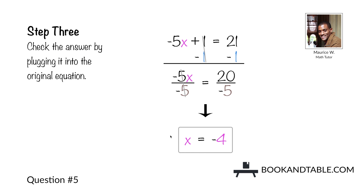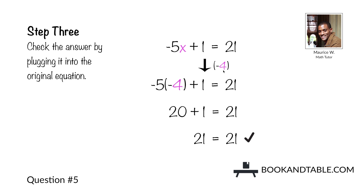Step three: check this by plugging it into the original equation, negative 5x plus 1 is equal to 21. We plug in negative 4 for x. Negative 5 times negative 4 would give us positive 20, and 20 plus 1 gives us 21. The value on the left side equals the value on the right side, which means we found the correct value for x, which is negative 4.